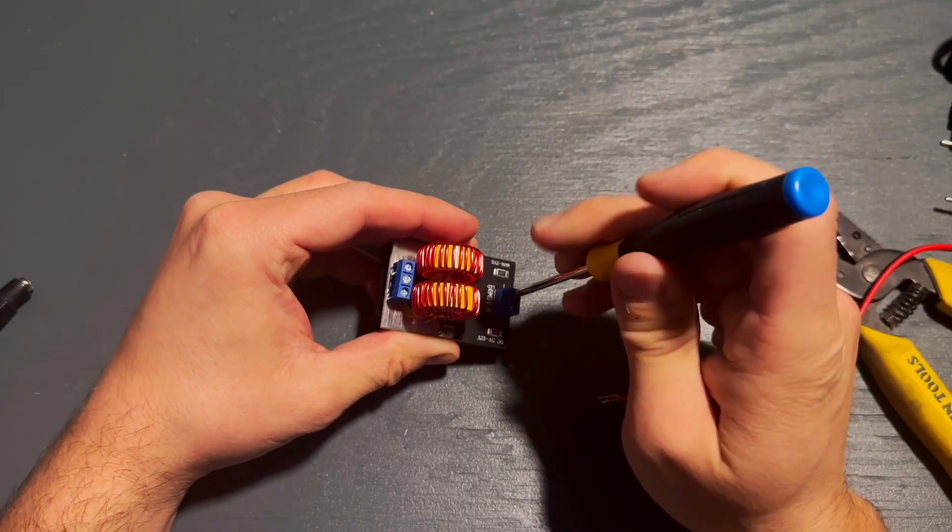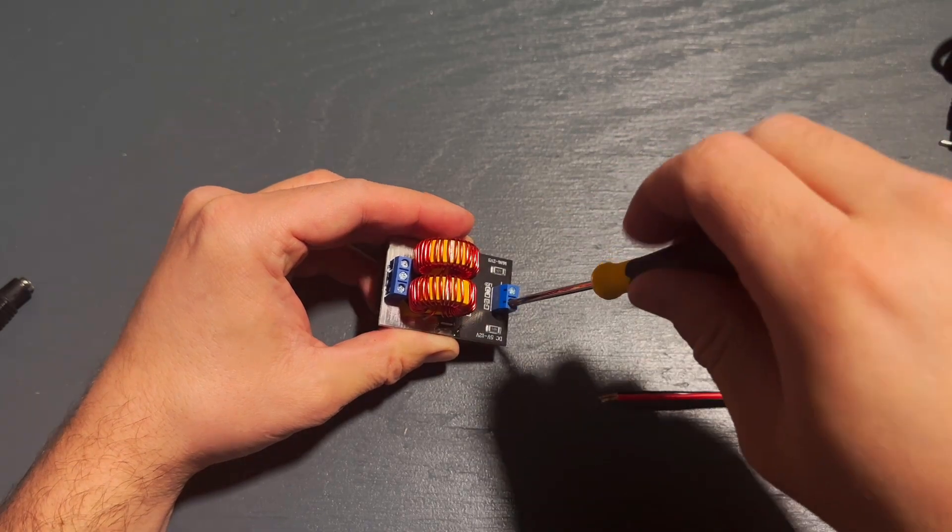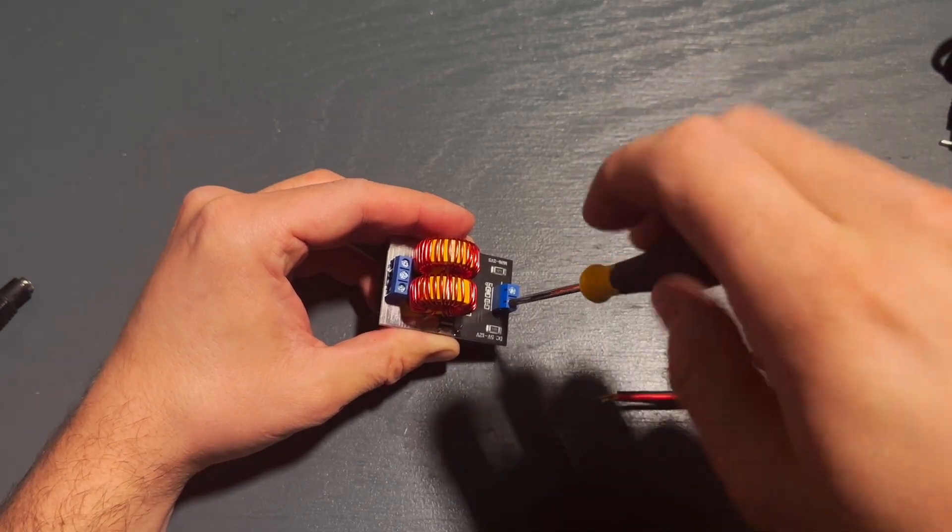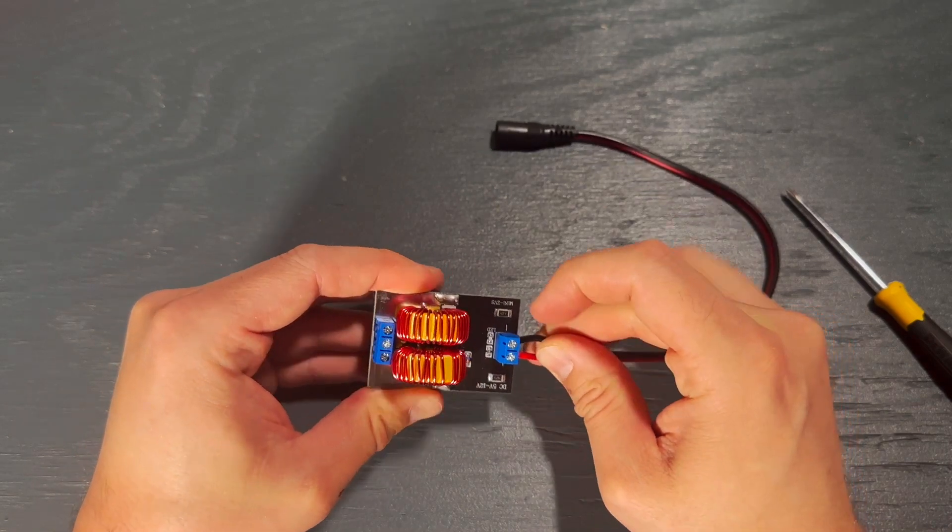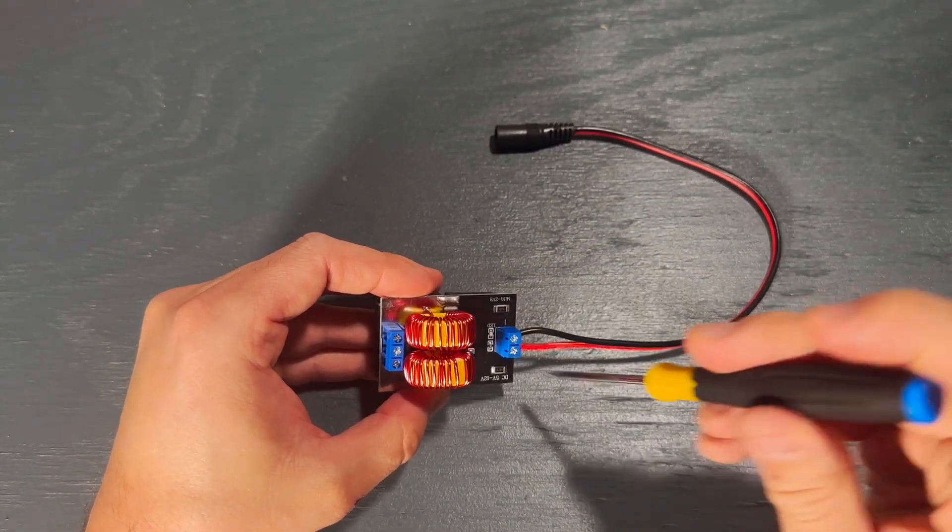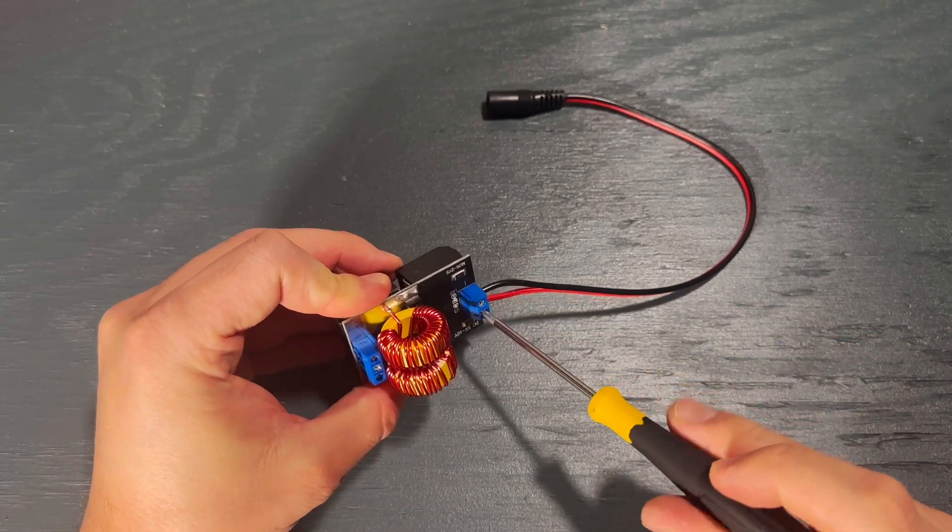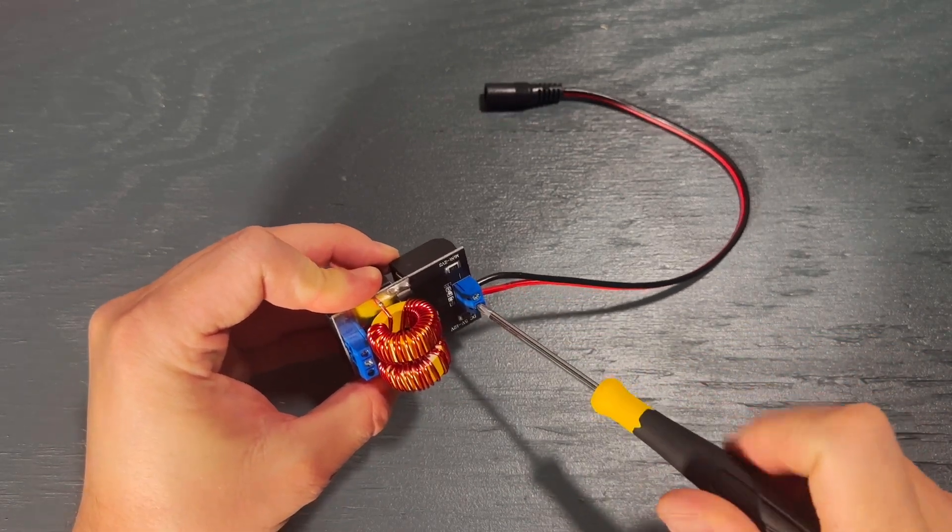The first thing you want to do is loosen these two screws on the heating board module. Then take your pigtail wire and make sure red goes in the positive and black goes in the negative. It says on the board which is which. Make sure you're using a female end of the pigtail adapters. Then tighten those up.